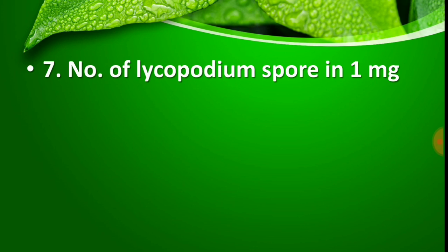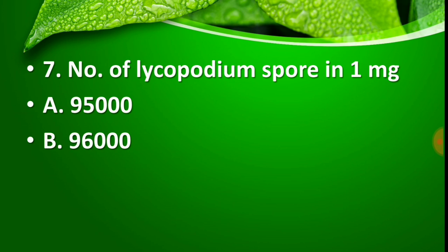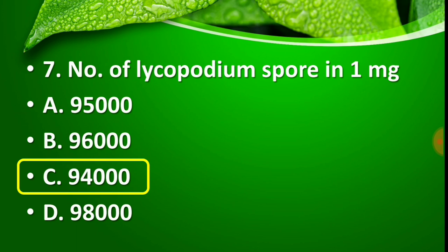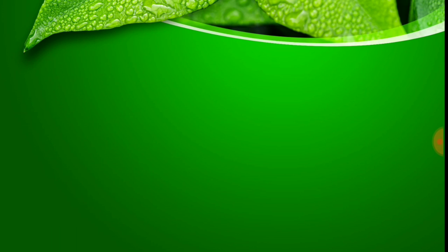Question number 7: Number of Lycopodium spores in 1 mg is — Option A: 95,000, Option B: 96,000, Option C: 94,000, Option D: 98,000. The right answer is Option C — 94,000. The number of Lycopodium spores in 1 mg of sample is 94,000.